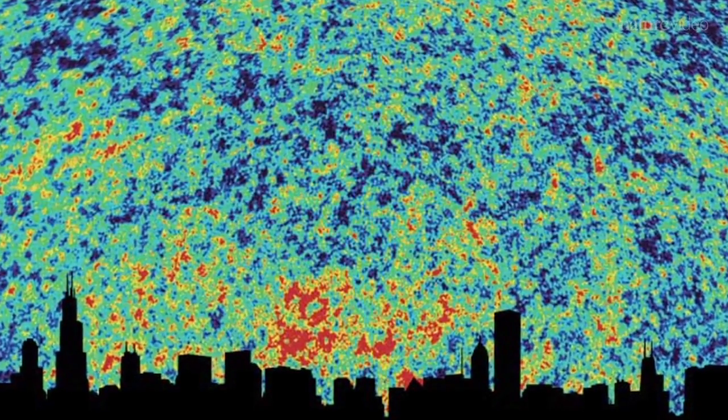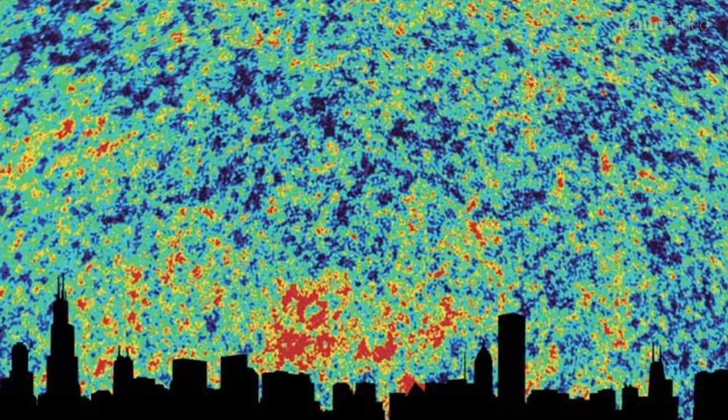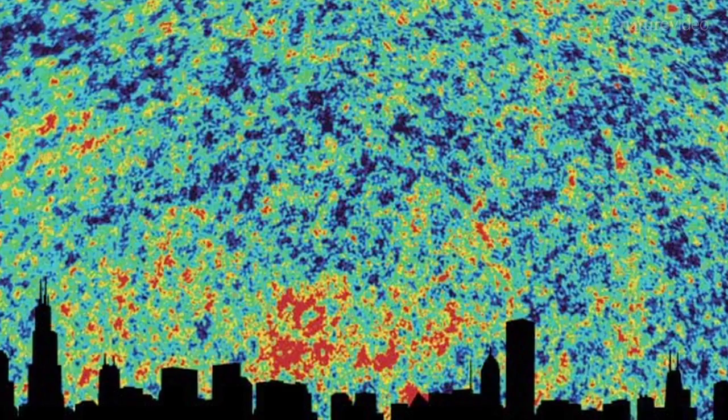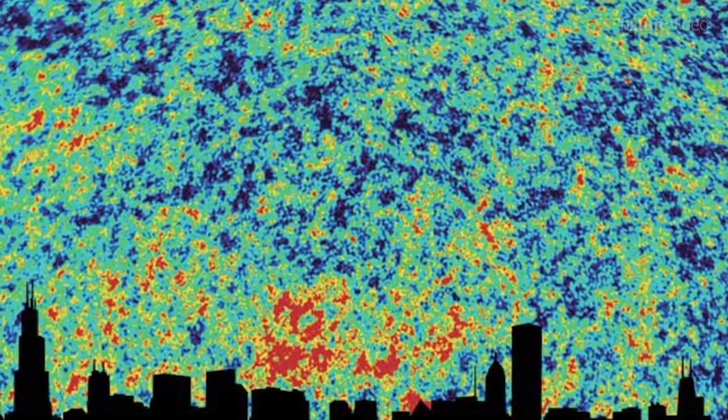The cosmic microwave background is the afterglow of the Big Bang, and it is everywhere. Perhaps this radiation could hold an imprint of gravitational waves.